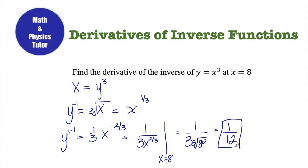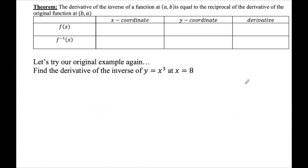This seems kind of complicated. What happens if y becomes more complicated, or solving for the inverse ends up being really long and difficult, or frankly just impossible? We need an easier way, and there is one. We have a theorem that says the derivative of the inverse of a function at point (a,b) is equal to the reciprocal of the derivative of the original function at point (b,a).